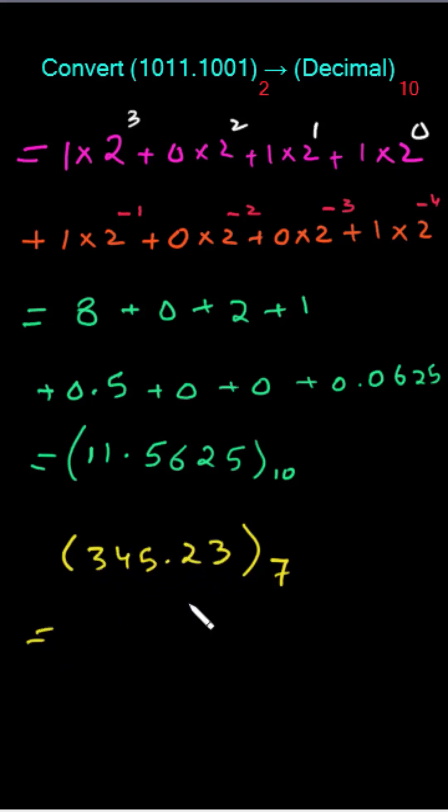It will be like 3 is gonna multiply with 7 + 4 is gonna multiply with 7 + 5 is gonna multiply with 7. Then this fraction: 2 is gonna multiply with 7 + 3 multiply with 7. We have to assign the power in the same manner as we have done over here.